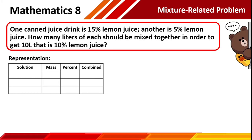So without further ado, let's jump into our first problem. One can of juice drink is 15% lemon juice. Another is 5% lemon juice. How many liters of each should be mixed together in order to get 10 liters that is 10% lemon juice? I know that the problem is quite confusing, but with the use of our representations and the rest of the steps, we can solve this problem.